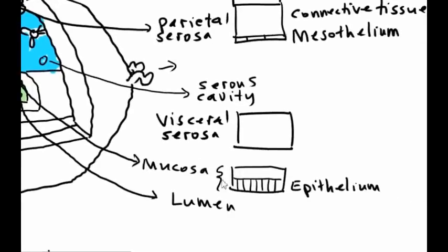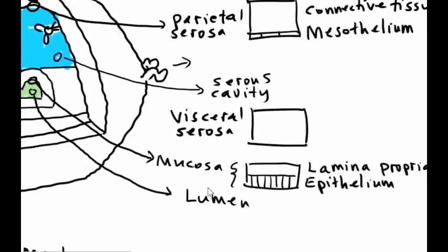The connective tissue layer of a mucosa is always called lamina propria. And that's true of not only the digestive tract, but urinary, reproductive, and so forth. Now at this point, we can add some more detail.